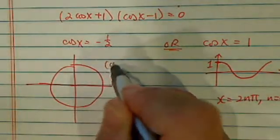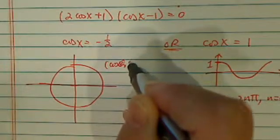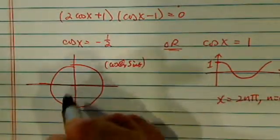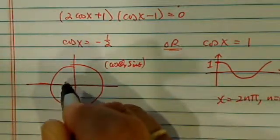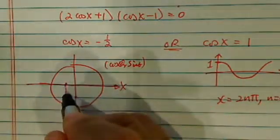Cosine, you remember it's always the x value. Cosine theta and sine theta. So we're going to find negative half, which is on this side. This is x. Negative half, I'm going to come down here.